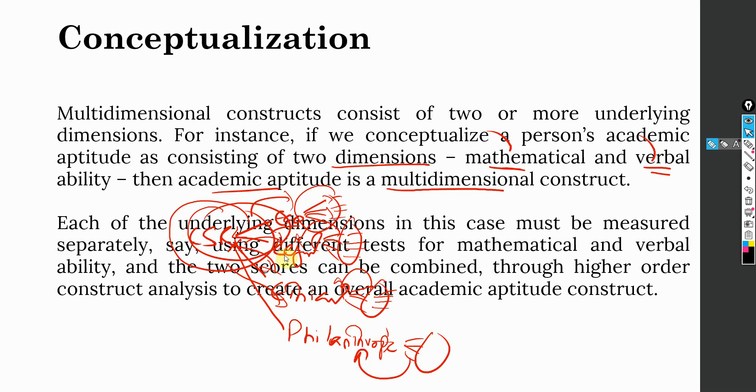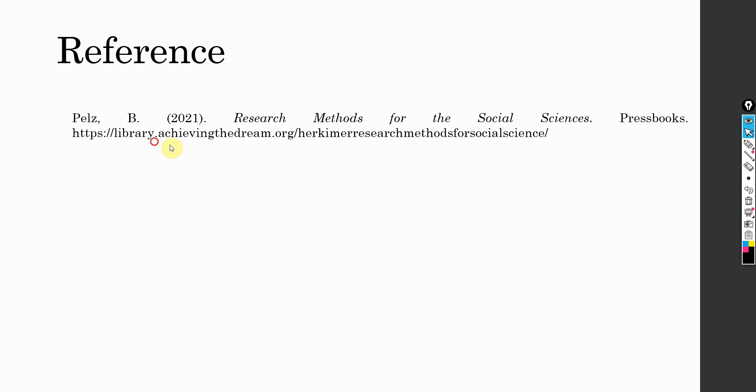That combination—in PLS-SEM or CB-SEM—we do higher order analysis or hierarchical component modeling or second order factor analysis. We can do different analysis in order to assess these constructs at higher level. This is a very good read to learn research methods for social sciences. The book is freely available. The link will be shared in the description. Thank you very much.